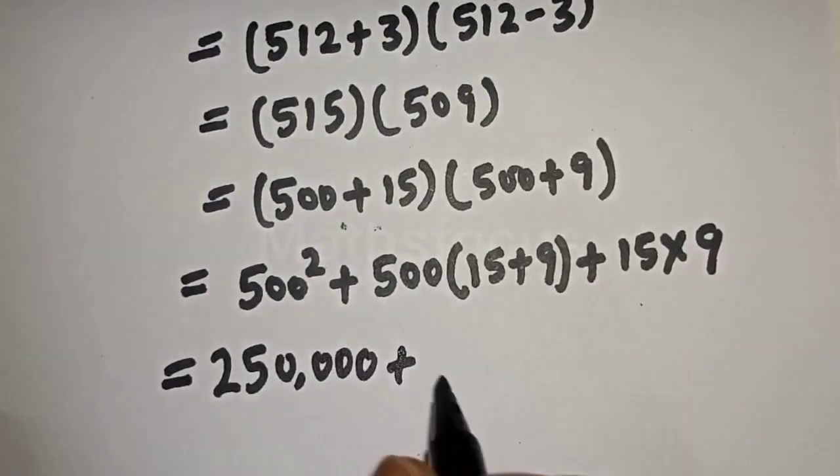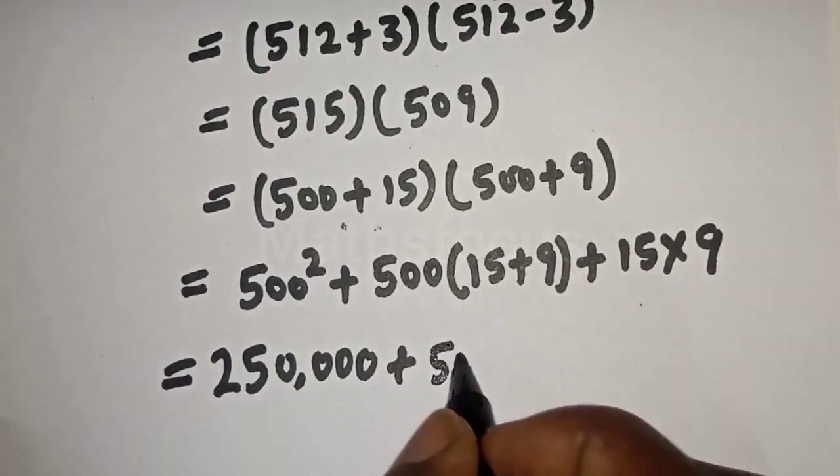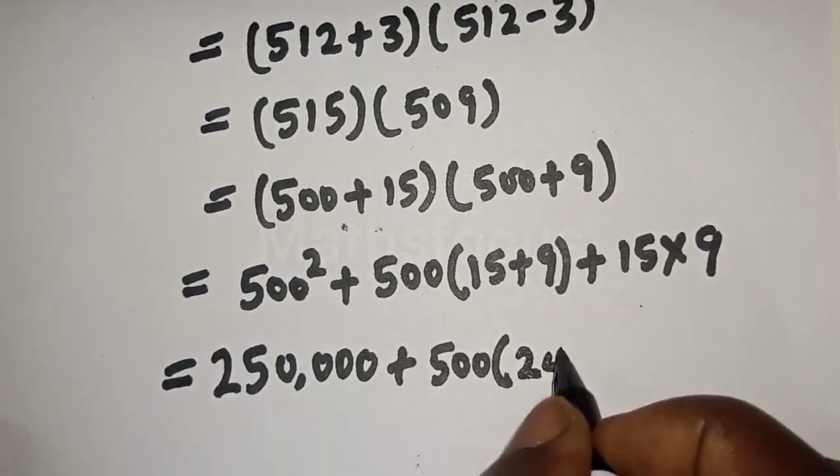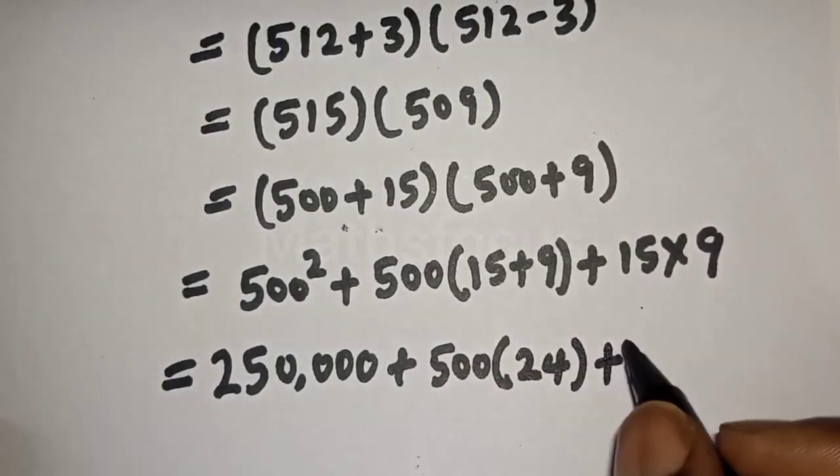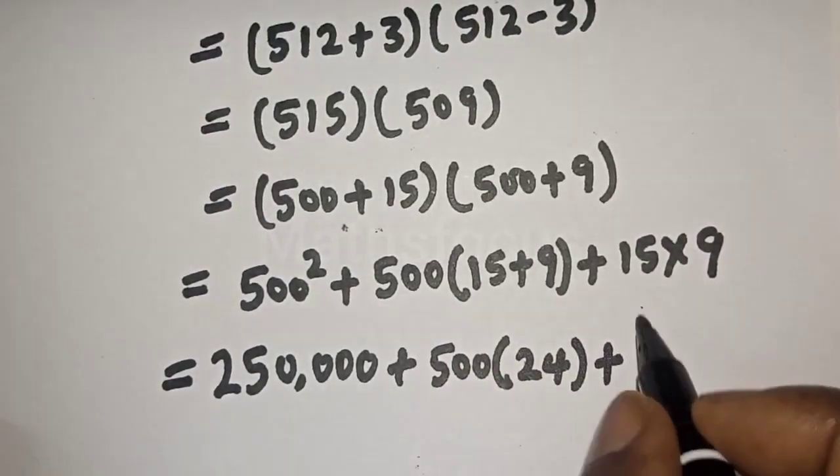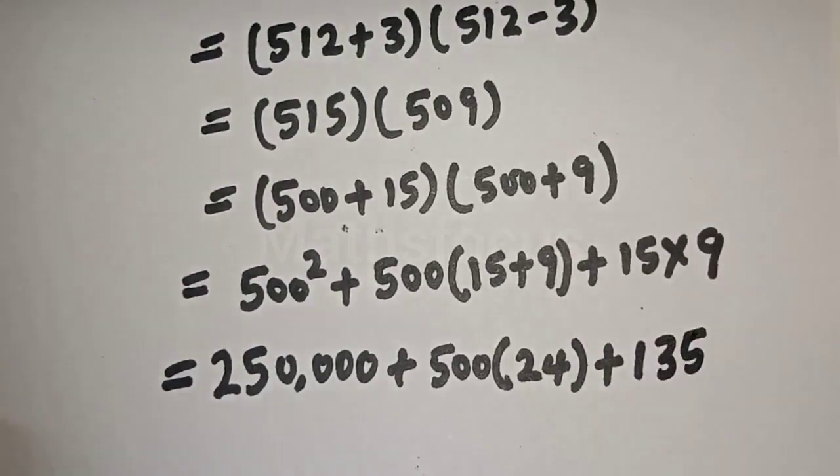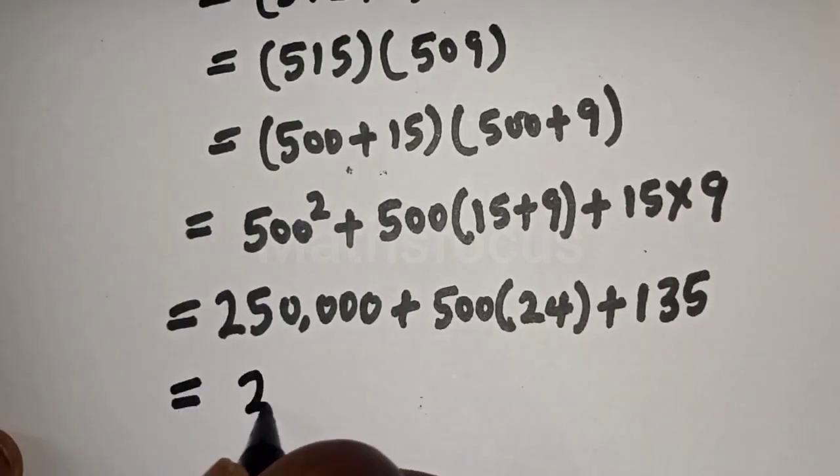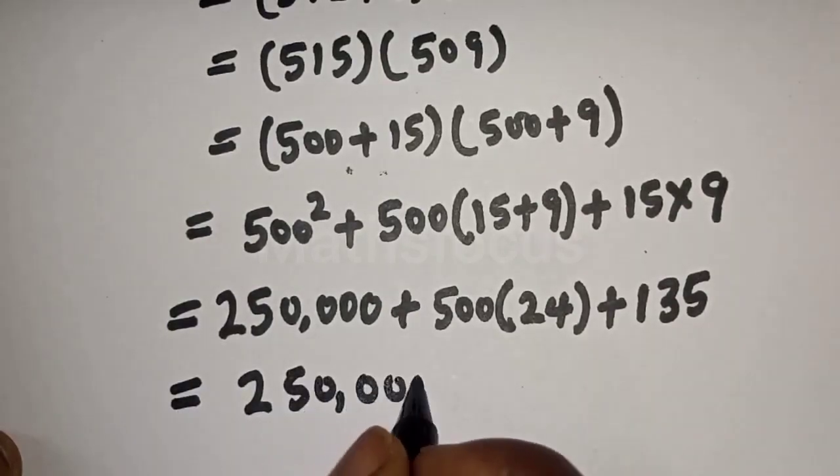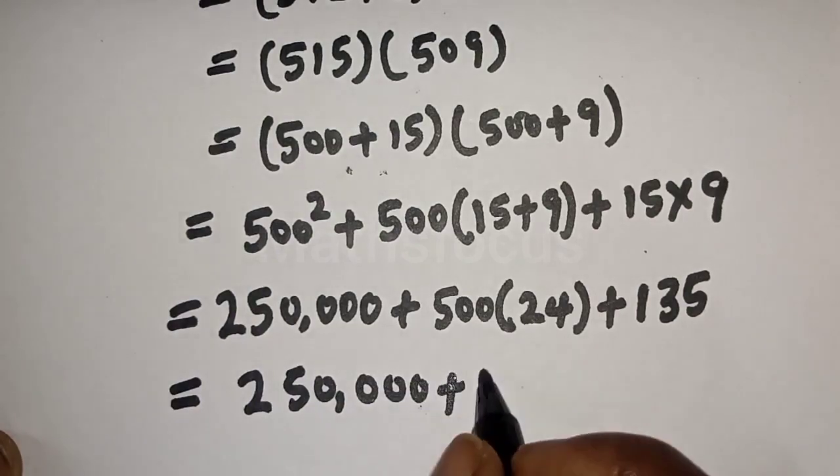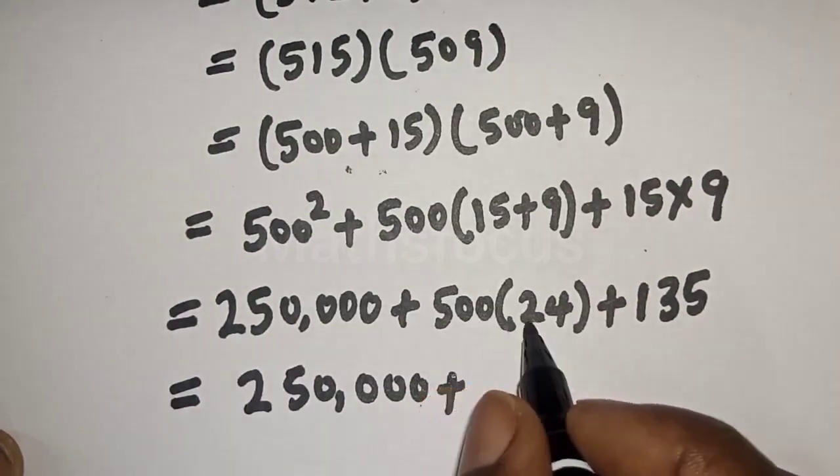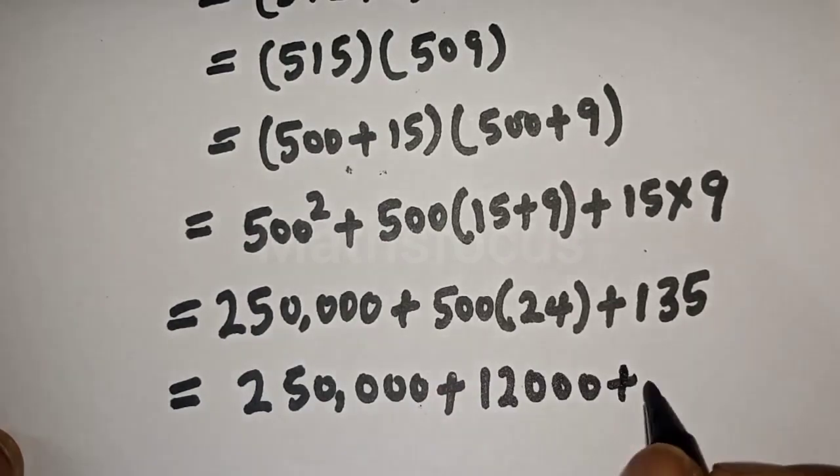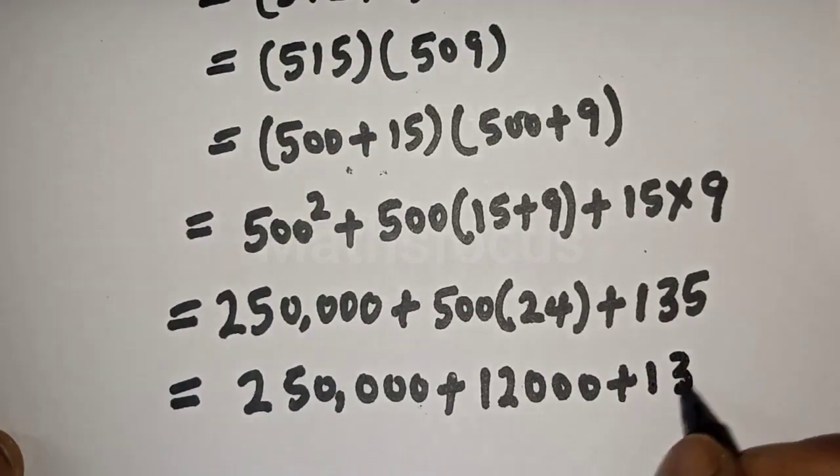Plus 500 times 15 plus 9, that is 500 times 24, plus 15 times 9 which is 135. That is 12,000 plus 135.